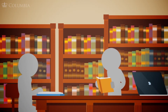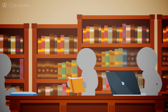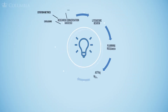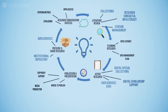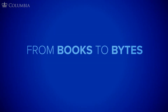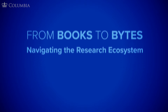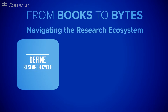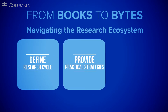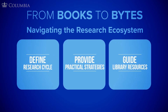Have a looming deadline for a major research project? Whether you're an undergrad writing your first paper or an established author with multiple publications, navigating the research ecosystem can be daunting. That's why the libraries at Columbia University have created From Books to Bytes: Navigating the Research Ecosystem, a set of online resources that define the research cycle, provide you with practical strategies, and guide you through the vast resources available to you at Columbia.